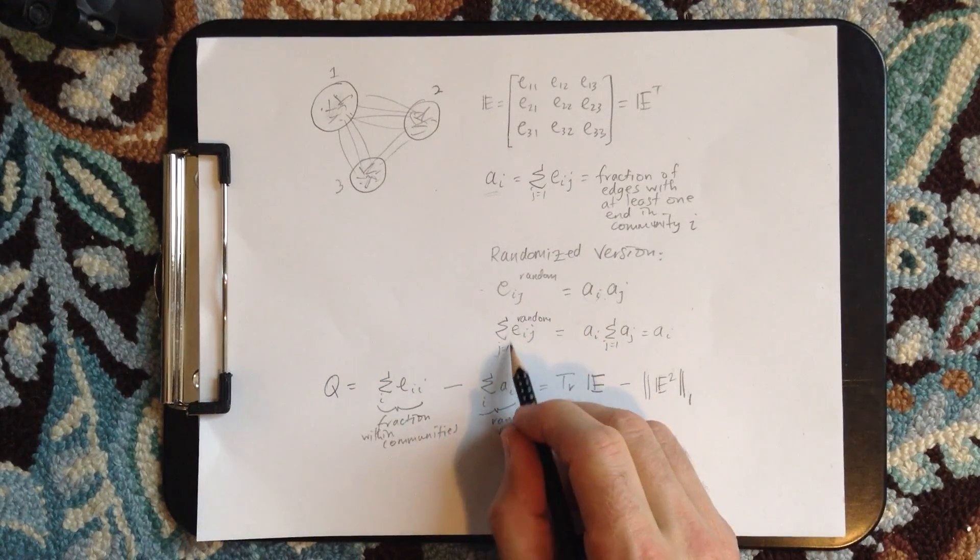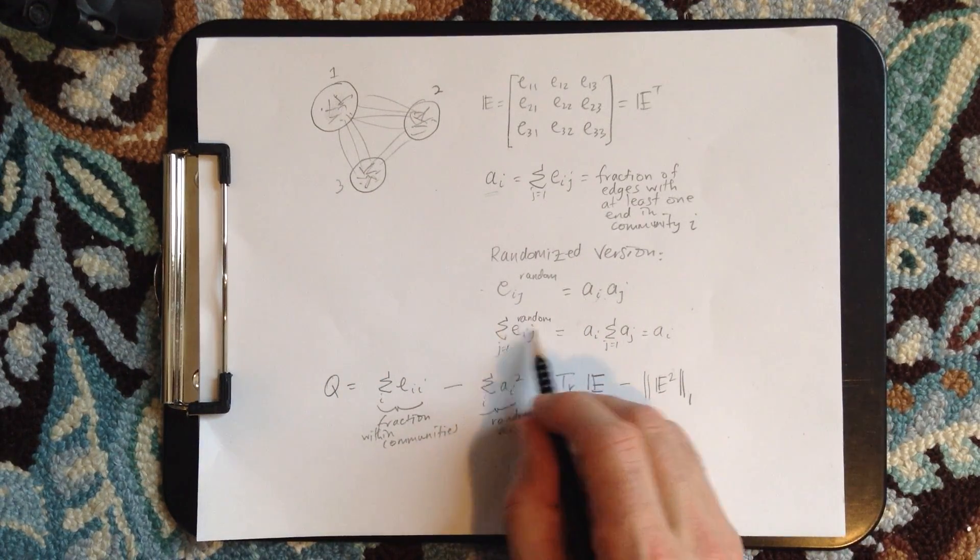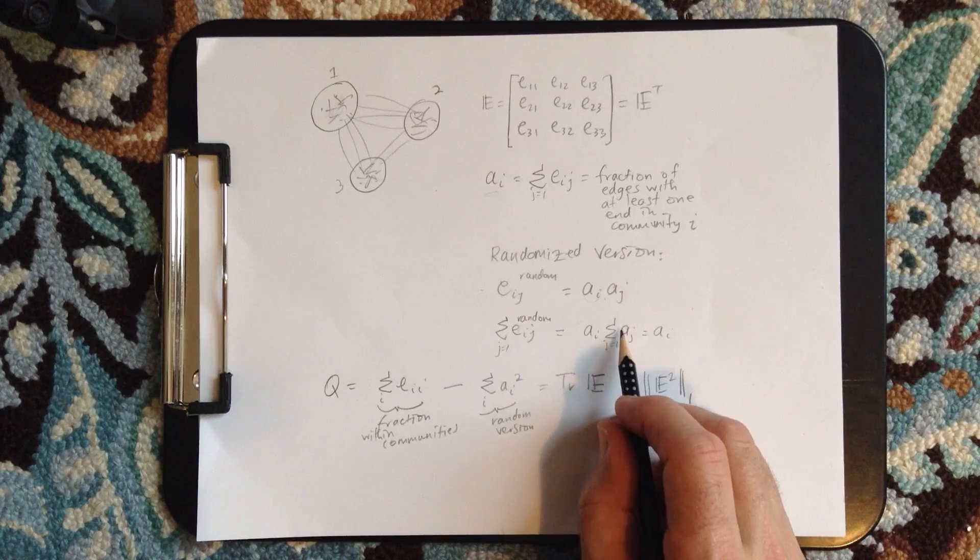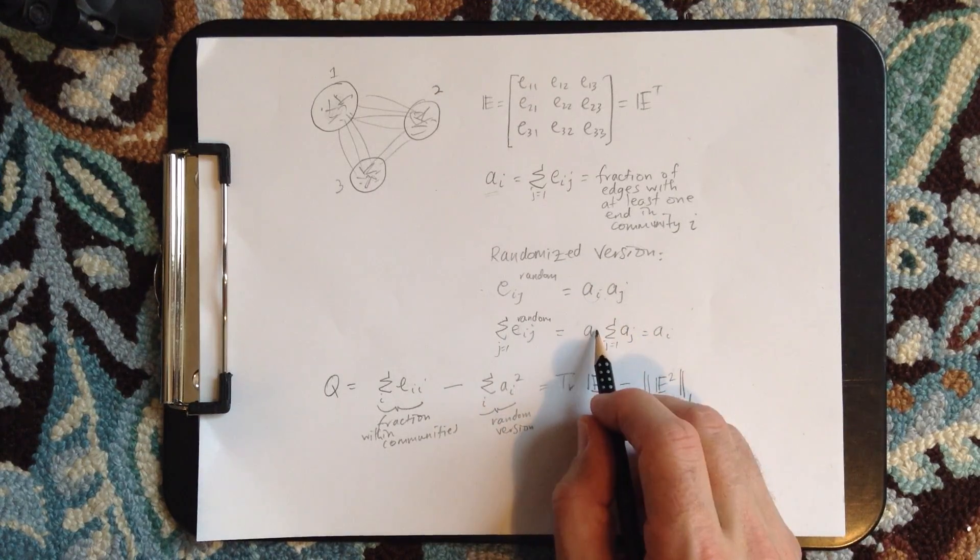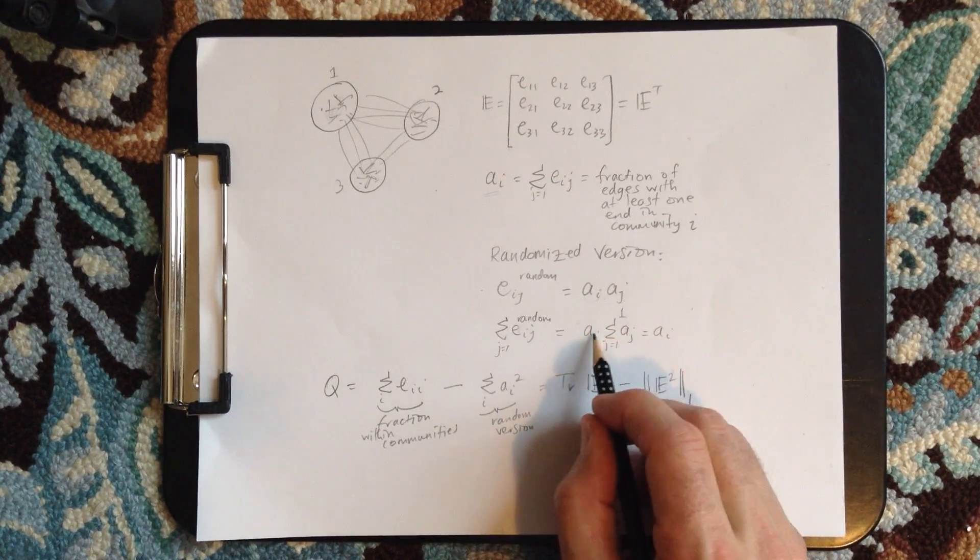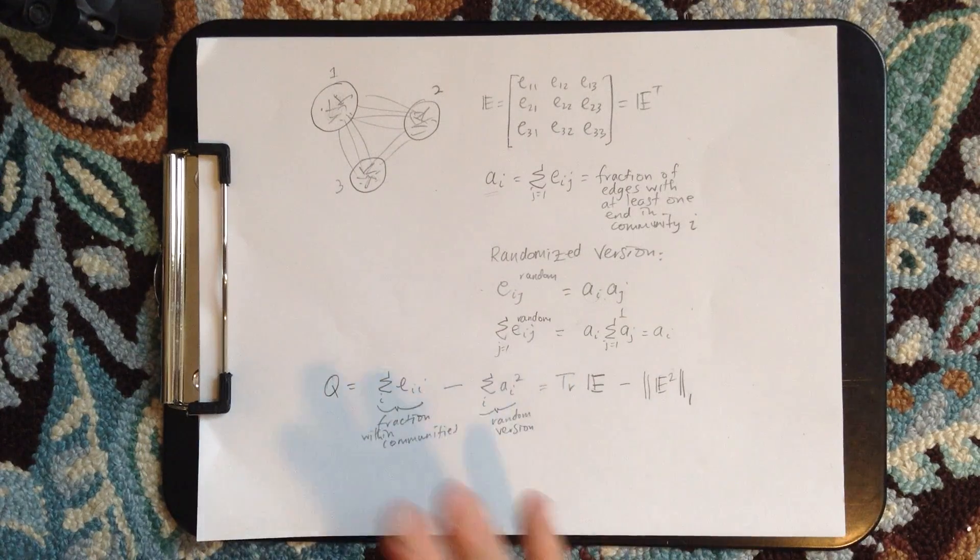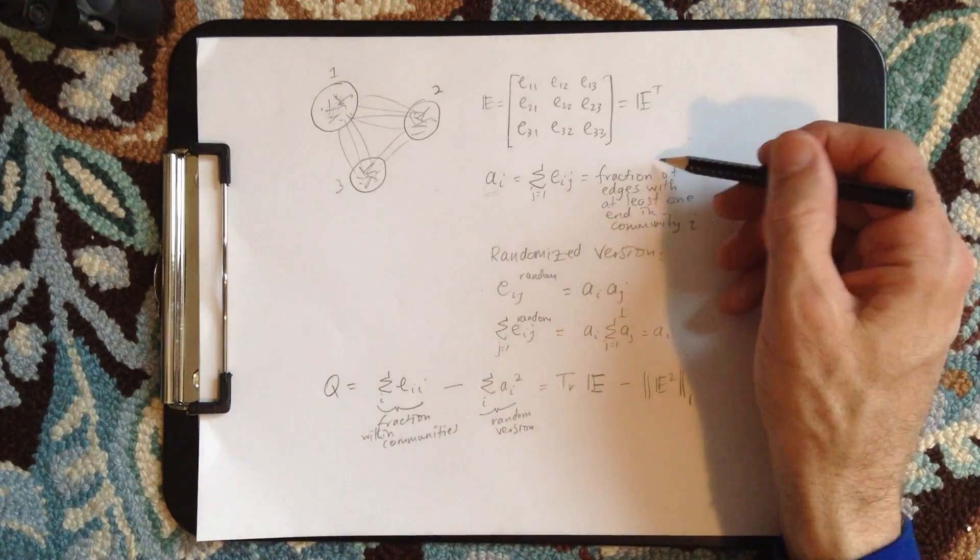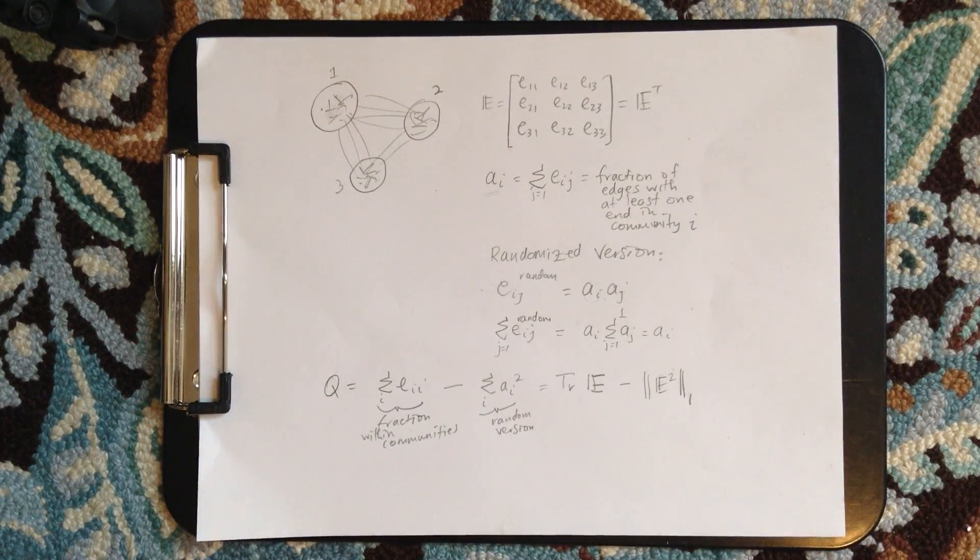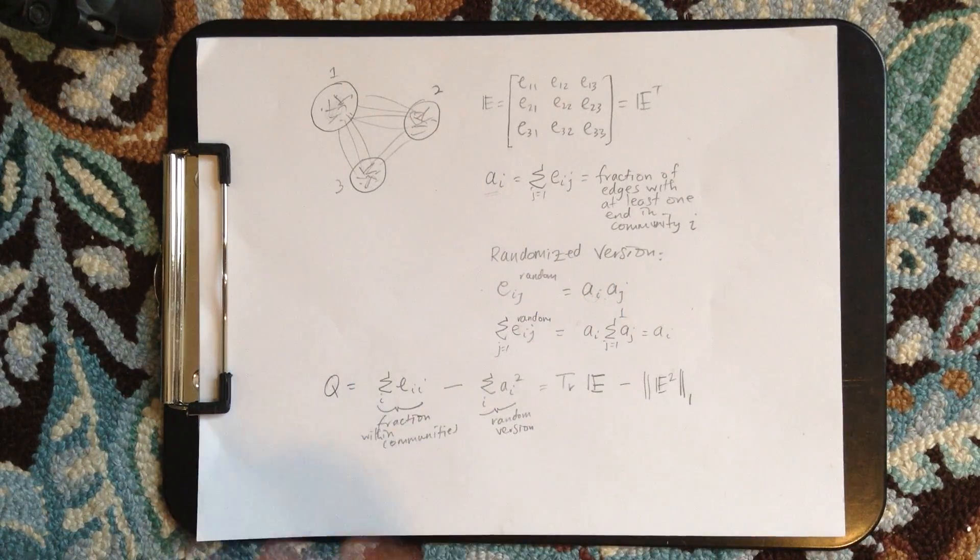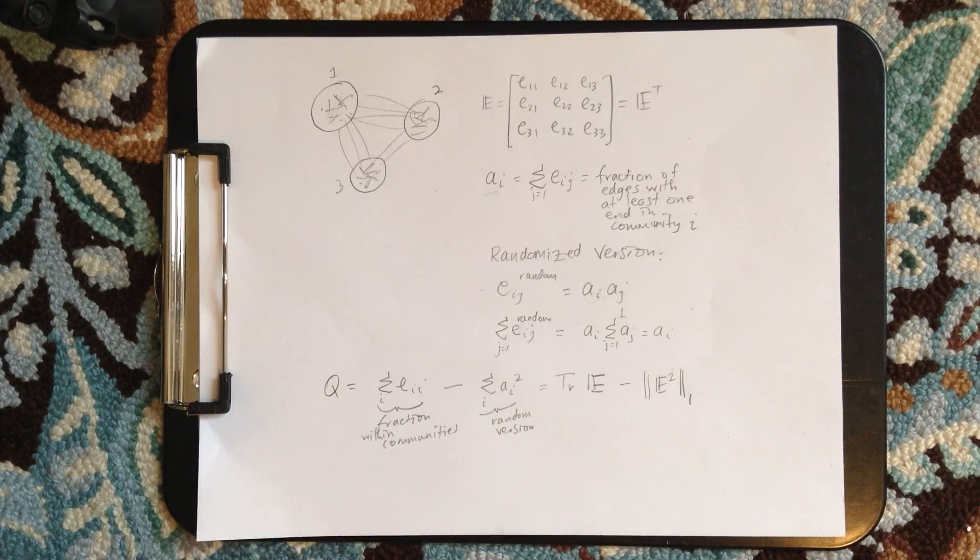We can just check that this is okay. So if we sum over J again for this random version, the AI is independent of J, so that pops out. So over this guy, we get one. So we've got AI again. So it looks the same in terms of the fraction of edges that are within, or that have at least one end in a community, looks the same. It's independent, so it's a randomized version.